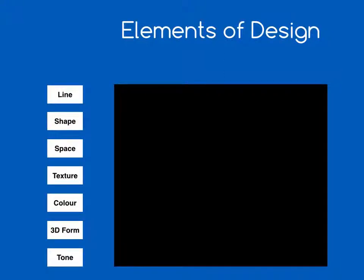In Applied Information Technology, there are seven elements of design and six principles of design that we must understand. The elements are the building blocks: line, shape, space, texture, colour, 3D form, and tone. There are seven elements of design that we should be able to understand, explain, and give examples of how they're used.